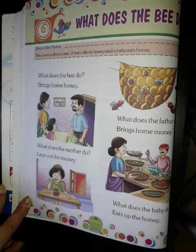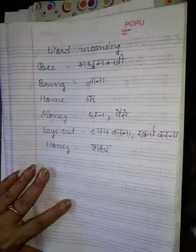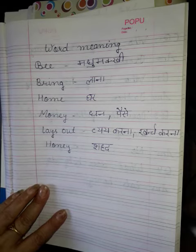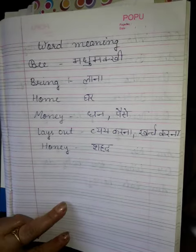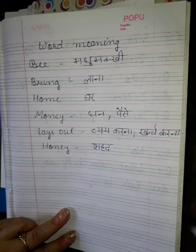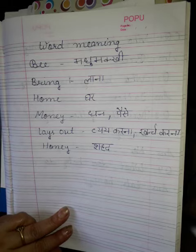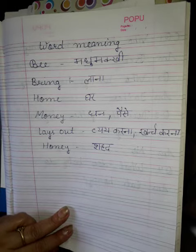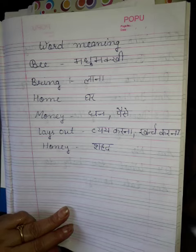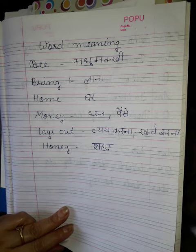Ab hum karenge is poem ke word meanings. Bee — b double e — bee means madhumakhi, shahed banati hai. Bring — lana. Home — ghar. Money — dhan, paisa. Lay out — vyay karna ya kharch karna. Honey — shahed.